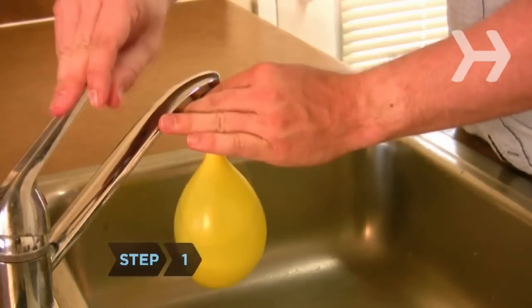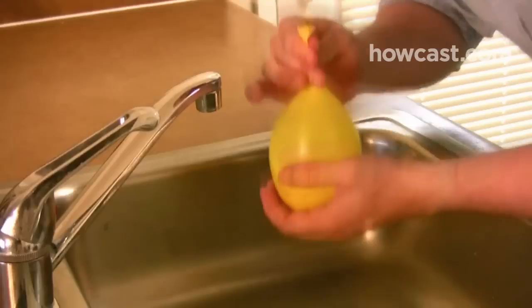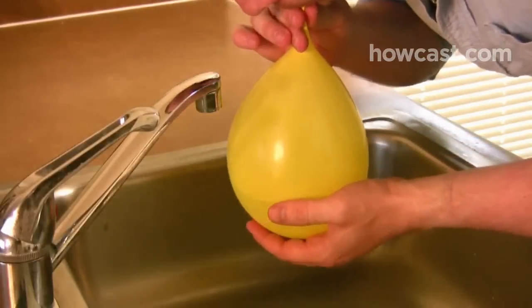Step 1. Fill the balloon halfway with water from the tap. Remove from the faucet and fill the other half with air. Tie it off.